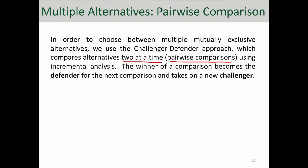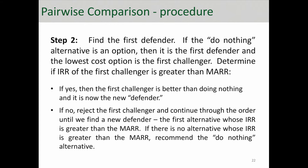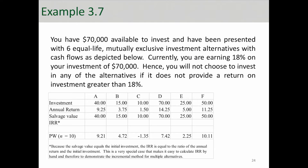This approach is called a challenger-defender approach. Let's look at an example where we have six alternatives. You have seventy thousand dollars available to invest and have been presented with six equal-life mutually exclusive investment alternatives. Currently you are earning 18% on your investment of seventy thousand dollars, so the MARR is 18%.